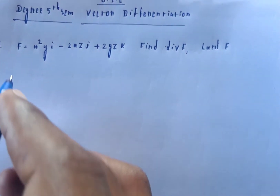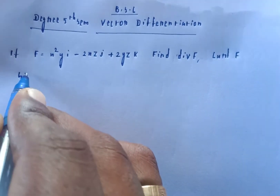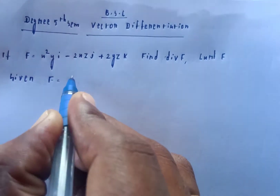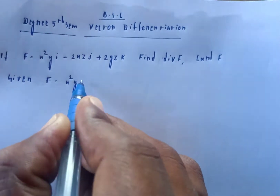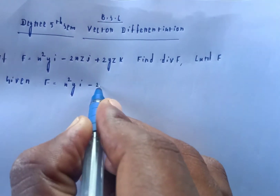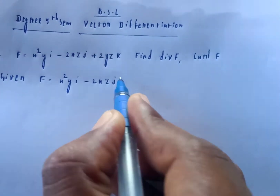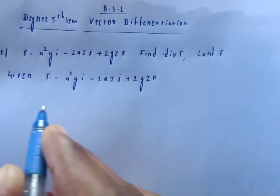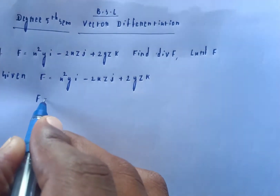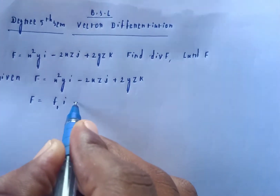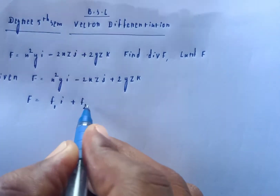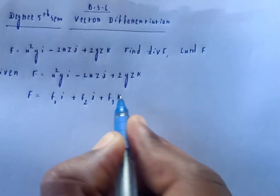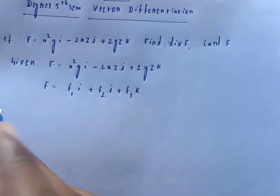Given f, we identify the components: f1, f2, f3 from the vector f = x²y i minus 2xz j plus 2yz k, written in the form f1 i plus f2 j plus f3 k.